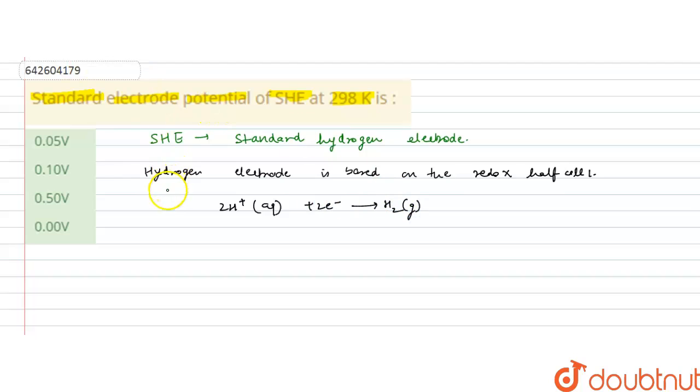Now, we can apply the Nernst equation to this reaction. The Nernst equation is: E_cell = E°_cell - (0.0591/n) × log([products]/[reactants]), where n is the number of electrons involved in the redox reaction, and the concentrations can also be expressed as activities.